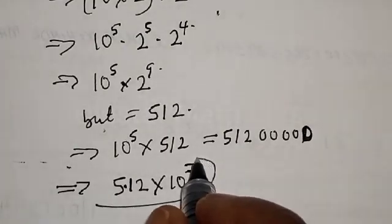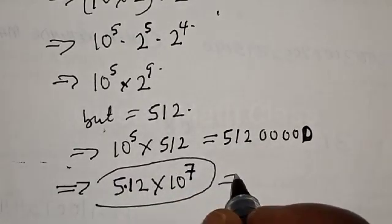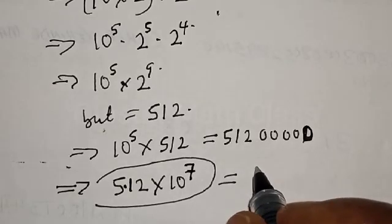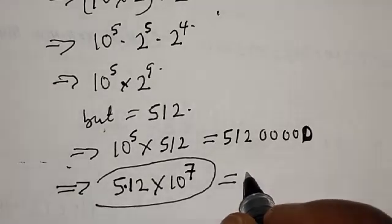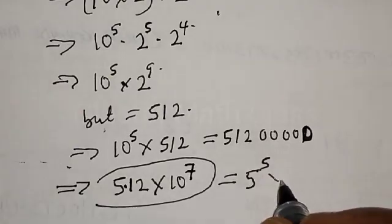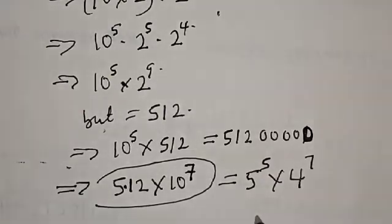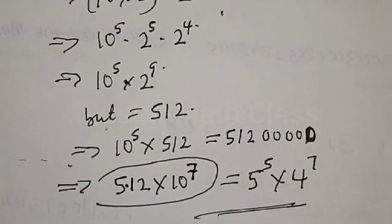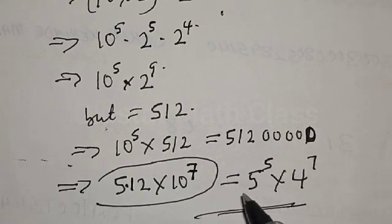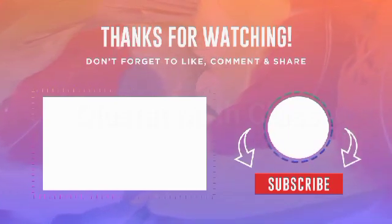So that is our final answer: 5 raised to the power 5 multiplied by 4 raised to the power 7 equals 5.12 times 10 to the power 7. That is just how to calculate without using a calculator. If you have enjoyed the class, please don't forget to like, share, comment and subscribe. Thank you.